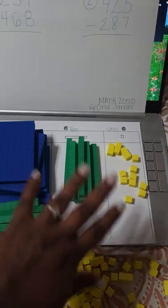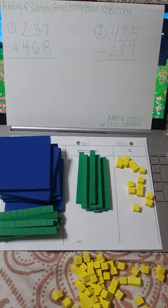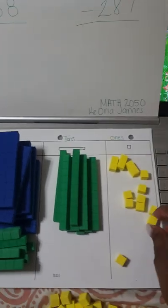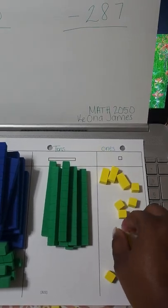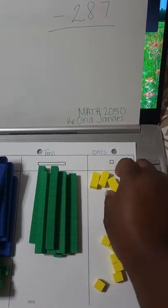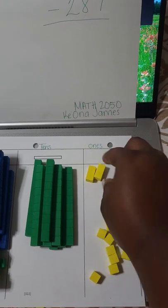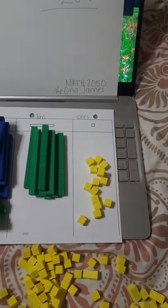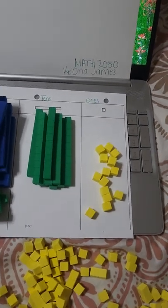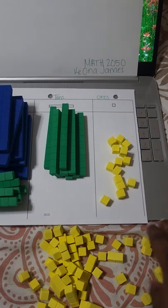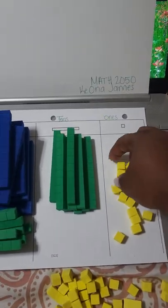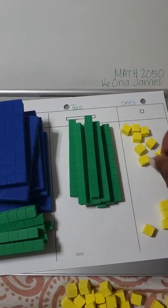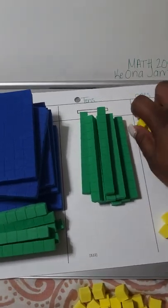So you can go ahead and count all of this to get your answer, but we're going to regroup. We have seven and eight — one, two, three, four, five, six, seven, eight, nine, ten, eleven, twelve, thirteen, fourteen, fifteen blocks in our ones. Being that we use base ten, we know that ten ones equals one ten, so we're going to group ten: one, two, three, four, five, six, seven, eight, nine, and ten — and we're going to take that ten off.